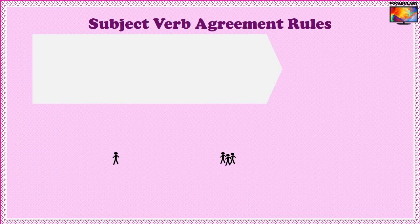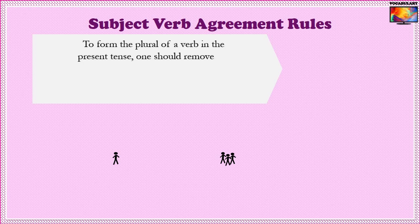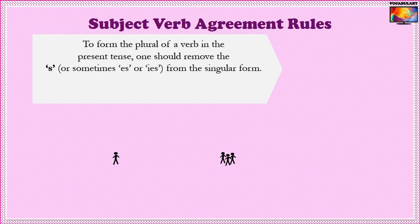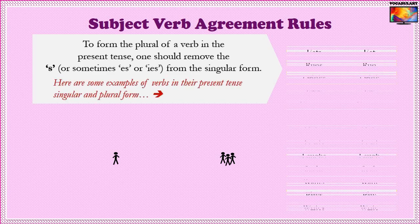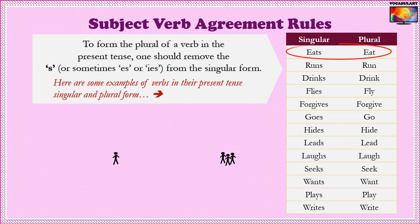Subject verb agreement rules say that to form the plural of a verb in the present tense, one should remove the S, or sometimes ES or IES, from the singular form. For example, 'eats' is the singular form and 'eat' without an S is the plural form. 'Runs' is the singular form and 'run' without an S is the plural form.